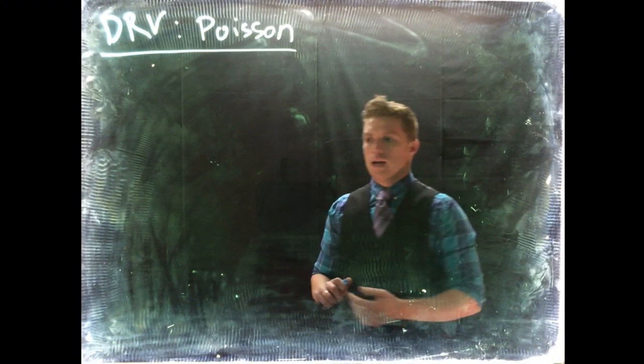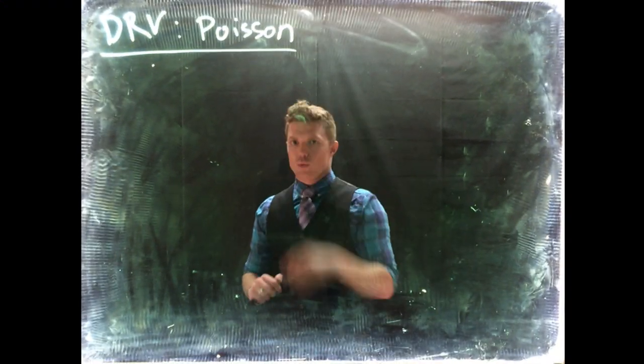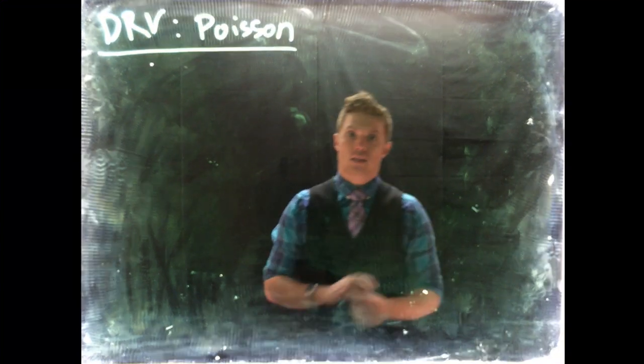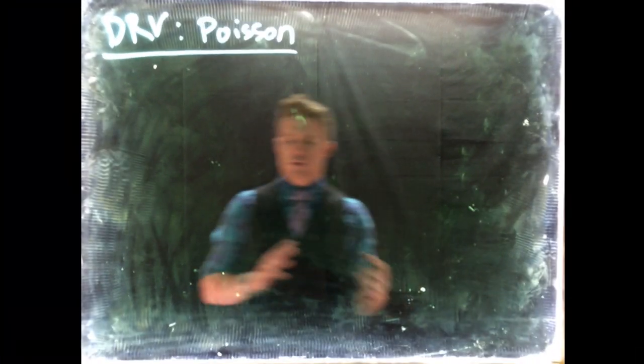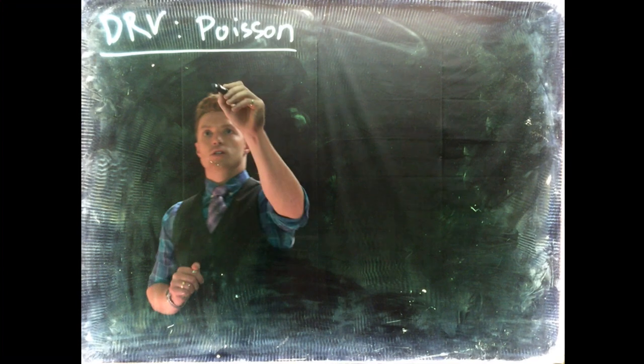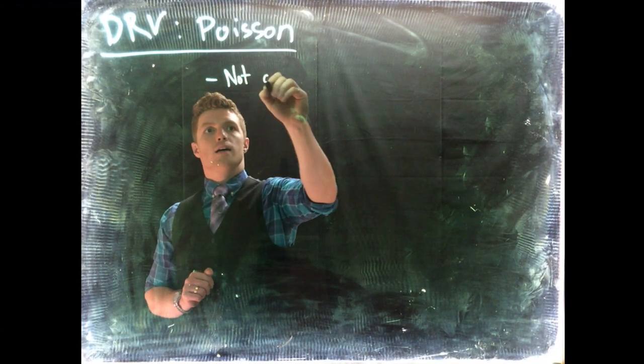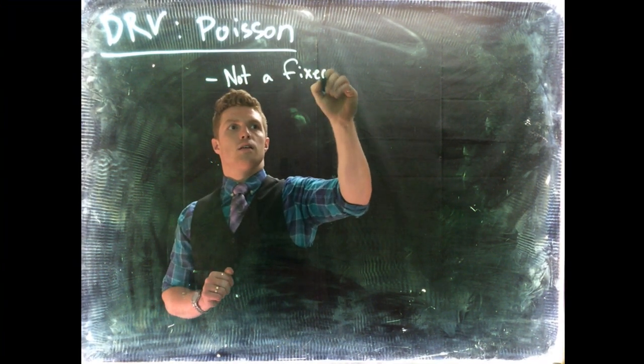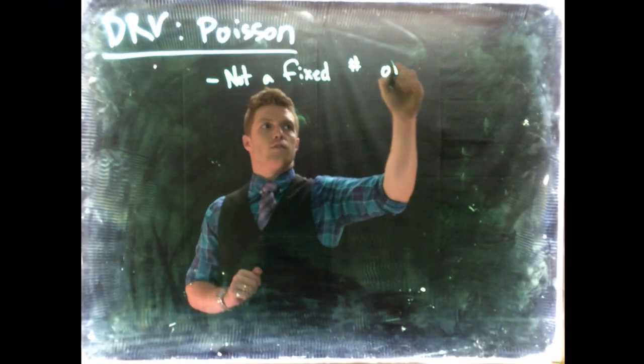Similar to the binomial distribution, we're looking at number of successes. The one major difference between Poisson and the binomial distribution is that there is not a fixed number of trials.